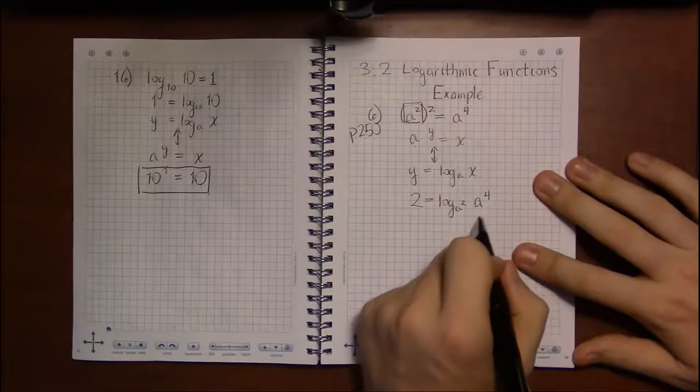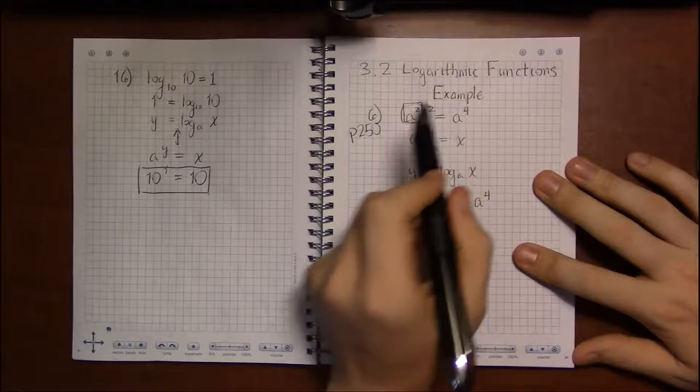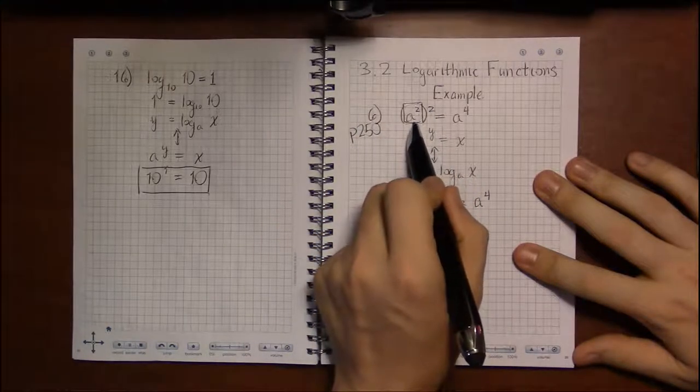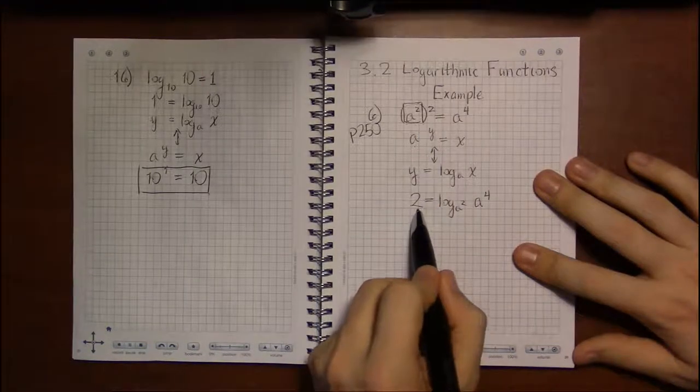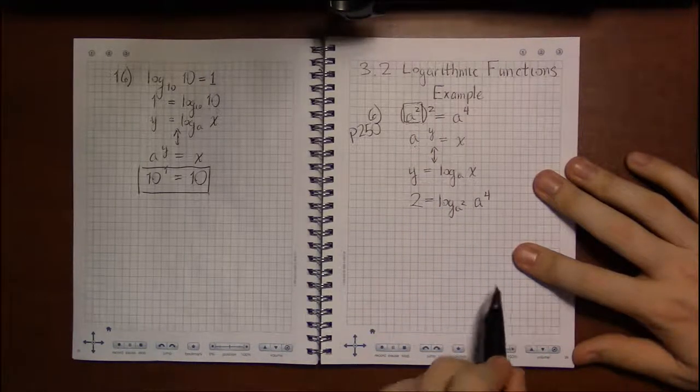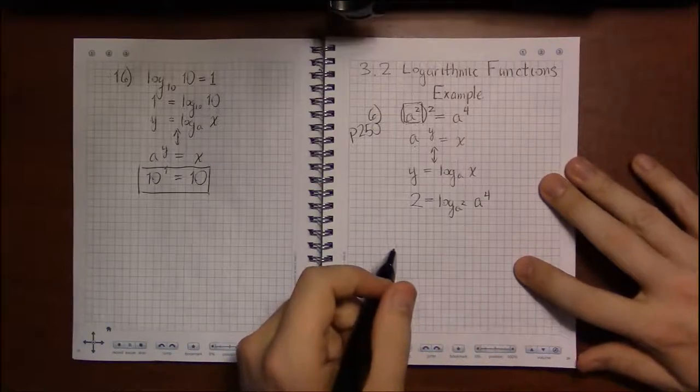It's still going to stay in its place on the right, but the a squared and the 2 kind of flipped. Instead of a squared coming first and 2 coming second, 2 comes first and a squared comes second when you write it in logarithmic form.